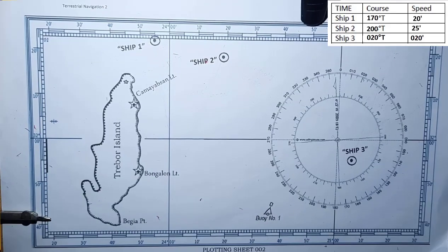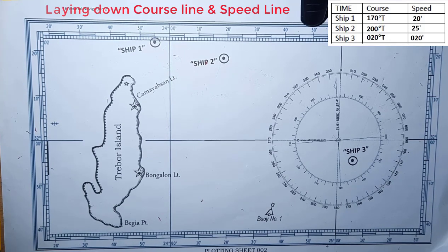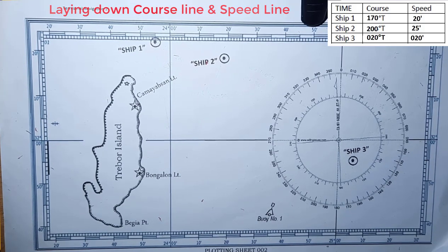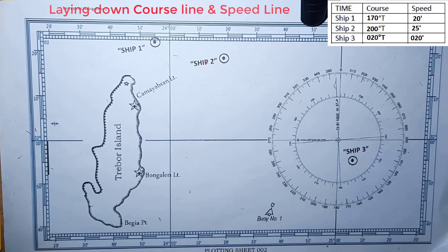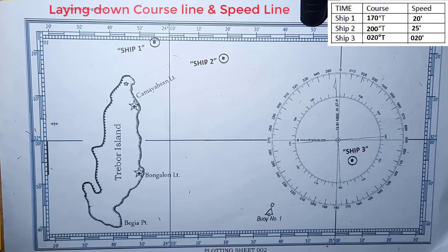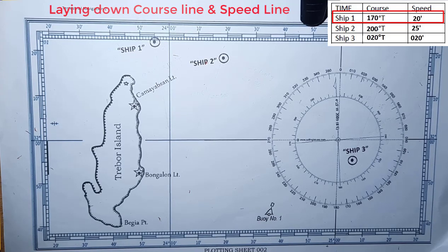Now let's have an activity of laying the course and speed line on the plating chart. First, the given: there are three ships on this plating chart positioned. Ship 1, ship 2, ship 3. Now we will lay down the given course and speed. Here's how to do it. First, ship 1: the course is 170 degrees true, the speed is 20 knots.